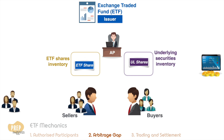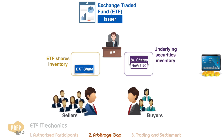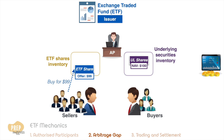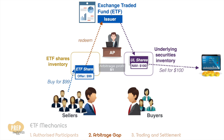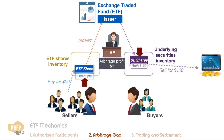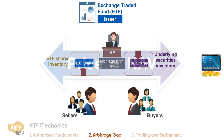In the opposite case, where supply is high and sellers are willing to sell at $99, the AP will buy the ETF share for $99, redeem the share for the underlying securities, and sell them at their NAV of $100, earning an arbitrage profit of $1. Likewise, this continues until there is no further arbitrage opportunity.